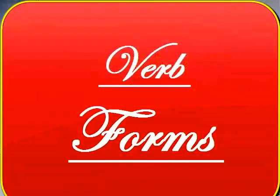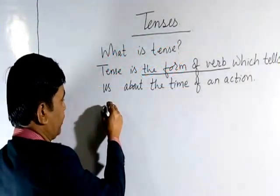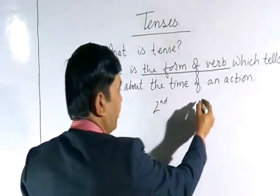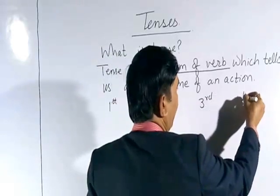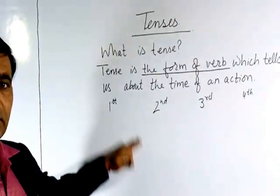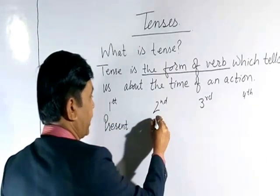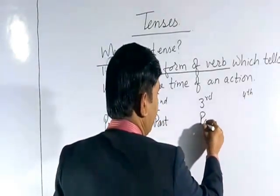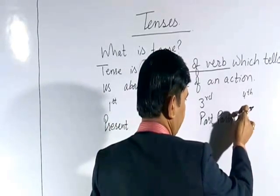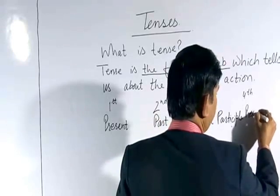Now let's discuss verb forms. When we talk about verb forms, we have four verb forms: first form, second form, third form, and fourth form. The first form is present, the second form is past, and the third form is past participle, and the fourth form is present participle.